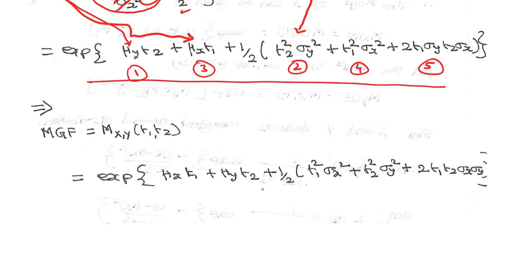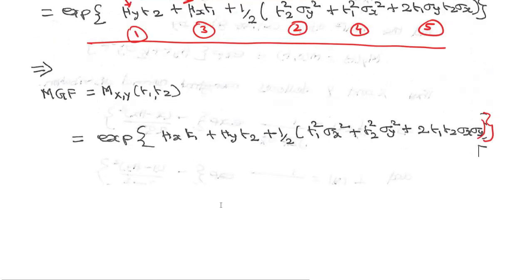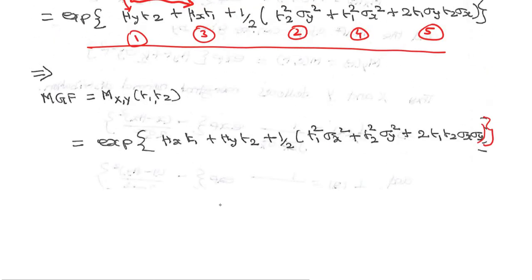Finally, the MGF of the bivariate normal distribution is found to be exponential of mu_x*t1 plus mu_y*t2 plus one-half times (t1 squared*sigma_x squared plus t2 squared*sigma_y squared plus 2*t1*t2*rho*sigma_x*sigma_y). This is the moment generating function of the bivariate normal distribution. Thank you — I hope you now have a clear idea of this derivation.